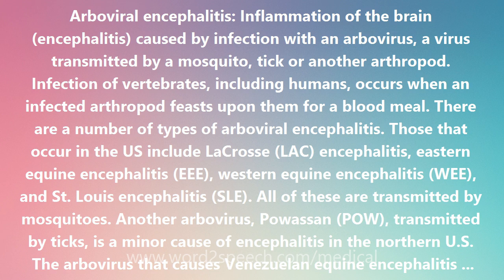All arboviral encephalitis are zoonotic, being maintained in complex life cycles involving a non-human primary vertebrate host and a primary arthropod vector. These cycles usually remain undetected until humans encroach on a natural focus, or the virus escapes this focus via a secondary vector or vertebrate host as the result of some ecologic change.